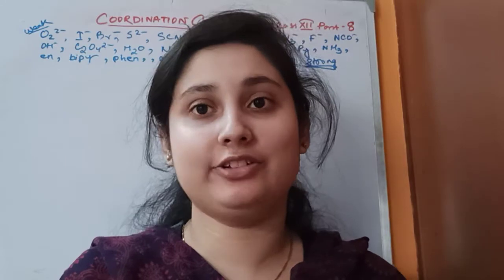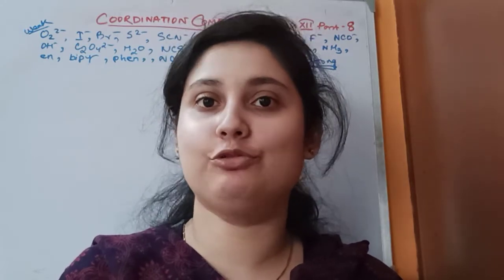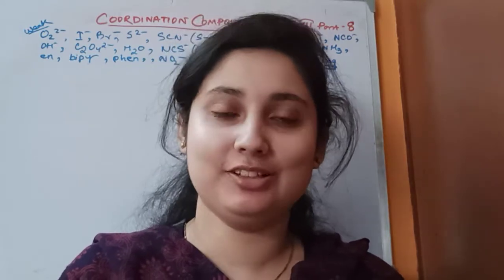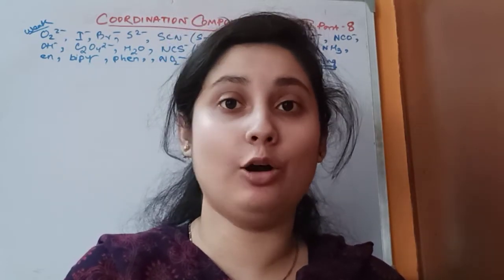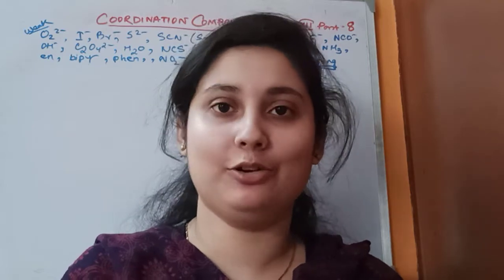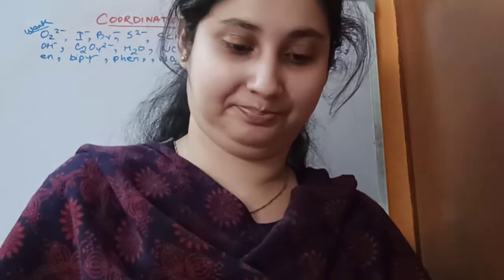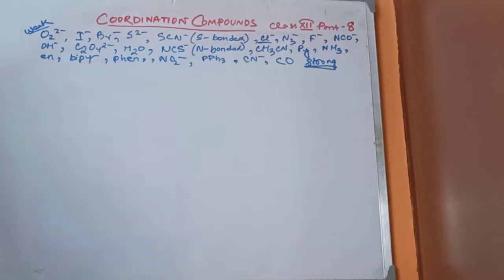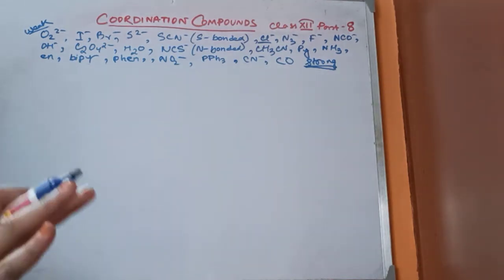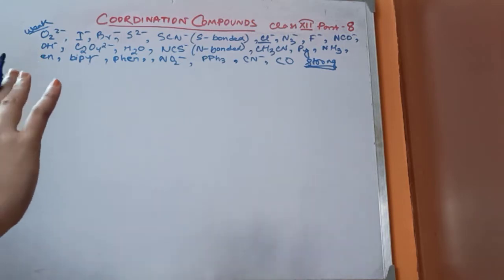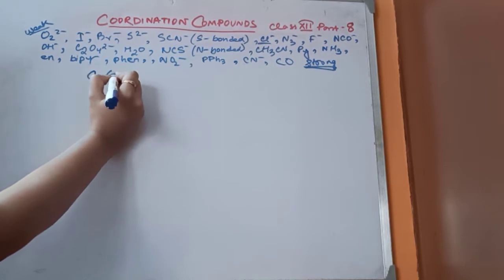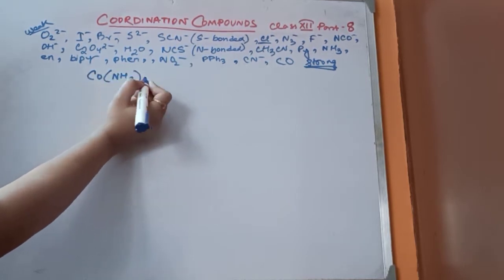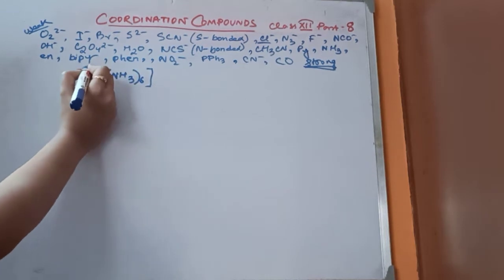Hello students, today I have come up with Part 8 of the Coordination Compounds chapter. In this part, we will cover outer orbital complexes. I will directly explain with hybridization. The first complex I'll come up with is the cobalt amine complex.